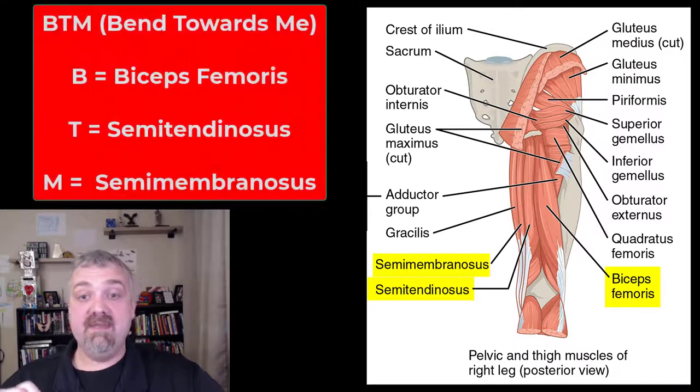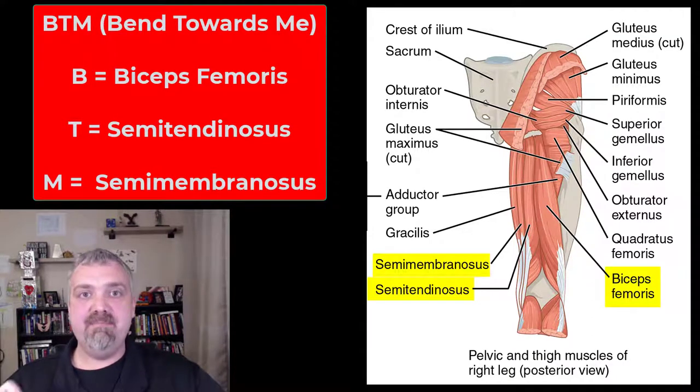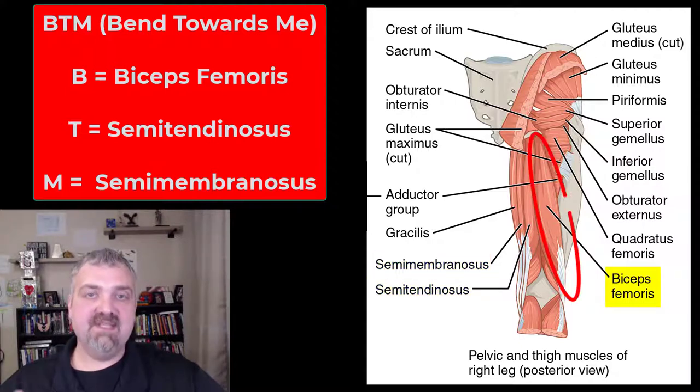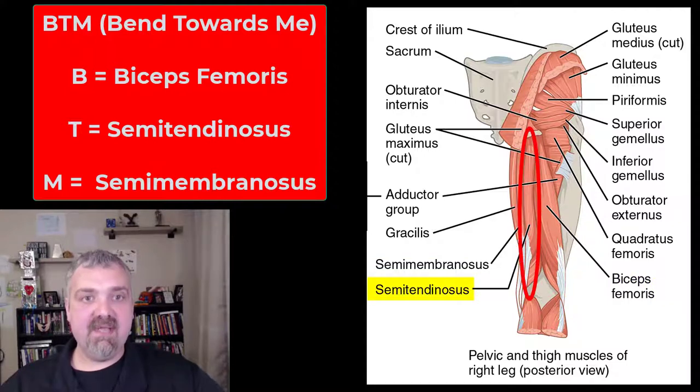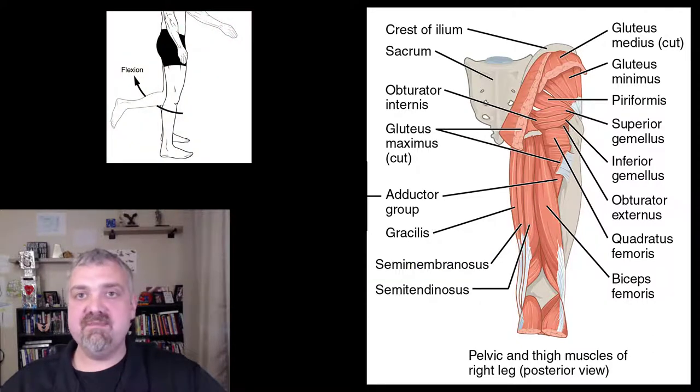And I'm saying them in that order because the mnemonic device to remember them from lateral to medial is BTM or bend towards me. So the biceps femoris is the most lateral of the three. The semitendinosus is in the middle, and the semimembranosus is the most medial of the three. So bend towards me is a great mnemonic device to remember the hamstrings from lateral to medial.